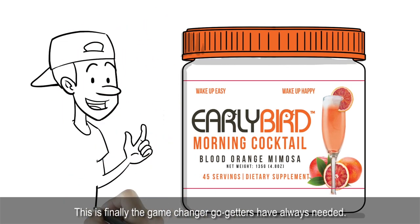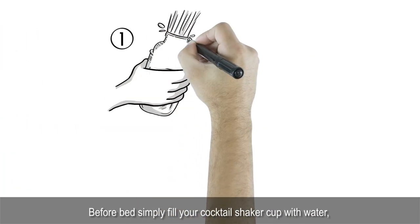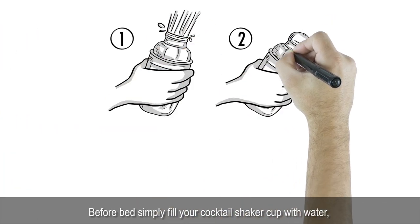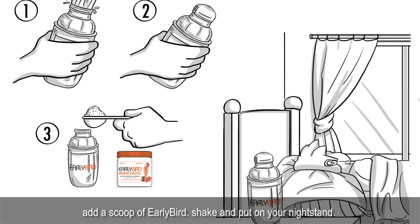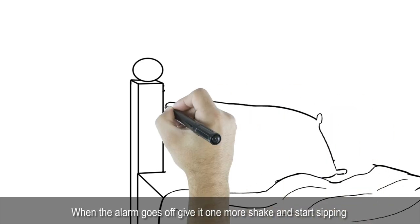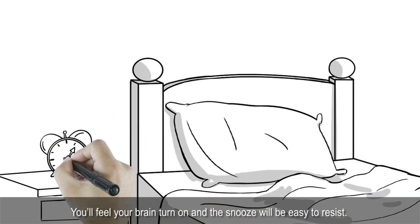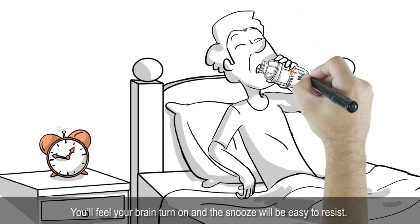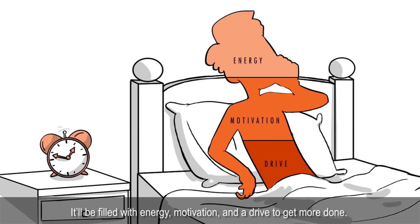This is finally the game-changer go-getters have always needed. Before bed, simply fill your cocktail shaker cup with water, add a scoop of Early Bird, shake, and put on your nightstand. When the alarm goes off, give it one more shake and start sipping, even before turning off the alarm. You'll feel your brain turn on and the snooze will be easy to resist. As for the rest of your morning, it'll be filled with energy, motivation, and a drive to get more done.